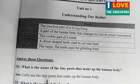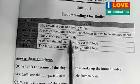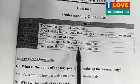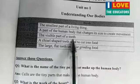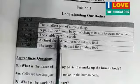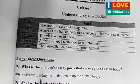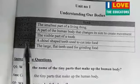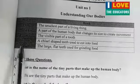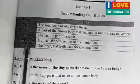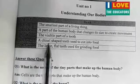Crown: this is a type of tooth — the visible part of a tooth. Insani dant ka dekha jane wala hissah. Crown kya lata hai — incisor. This is also a type of tooth.